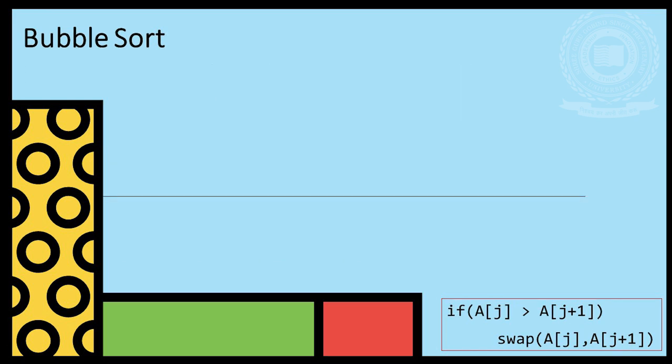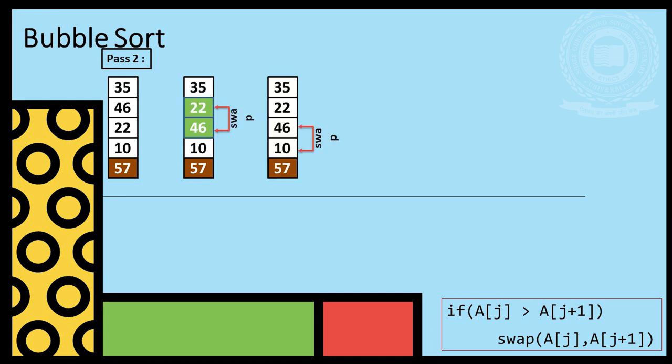Now, pass 2. We compare 35 and 46 and no pass. Now, we compare 46 and 22 and swap. Now, we compare 46 and 10 and swap. After pass 2, our two heaviest elements are at second last and last location respectively.